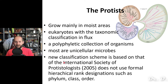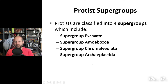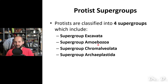Because these protists are not in a particular phyla, they do not use formal hierarchical rank designations such as phylum, class, or order. Instead, they are classified into supergroups. The four supergroups include Excavata, Amoebazoa, Chromoalveolata, and Archaeplastida.